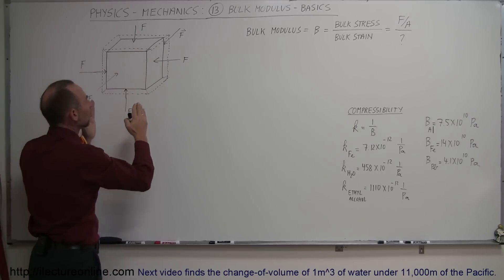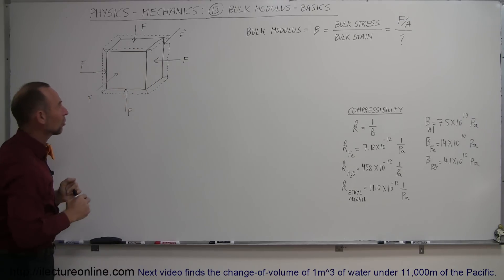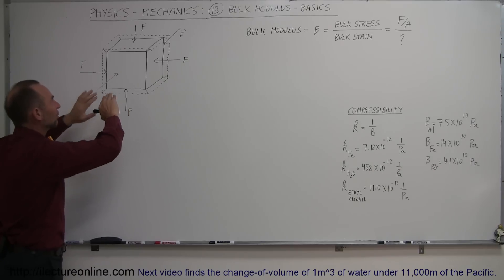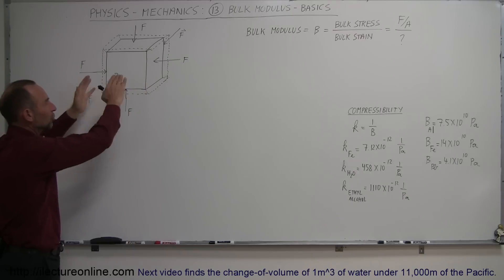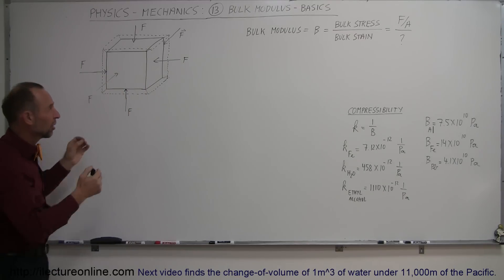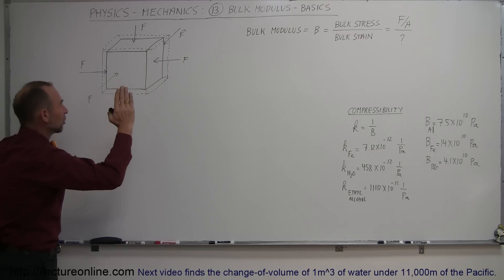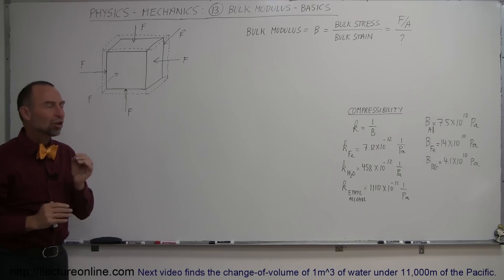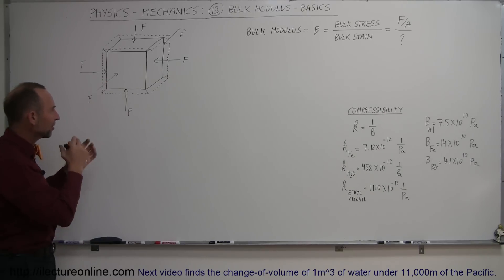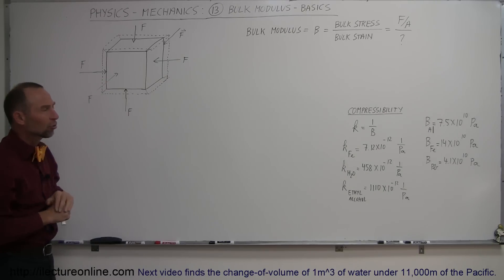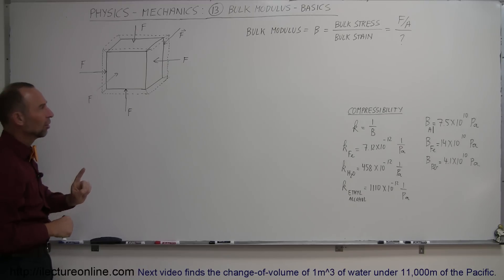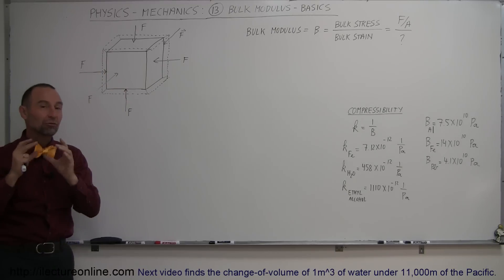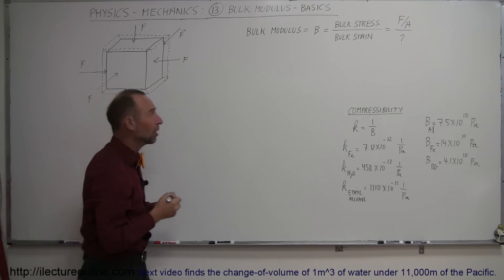Here we're taking a material where the dotted lines represent the original volume. You apply a certain amount of force on the material — that force divided over the surface area is a certain amount of pressure — and it will cause the material to shrink in volume. That change in size is what we call the strain. The bulk strain is defined as the change in volume divided by the original volume.